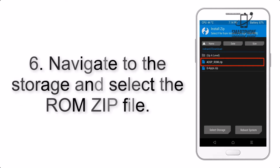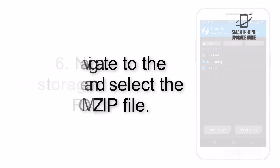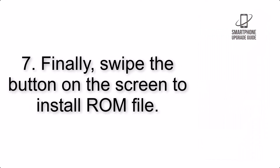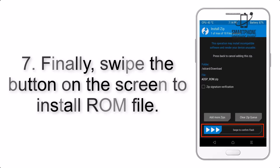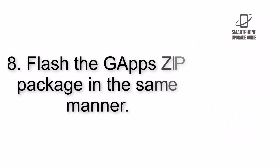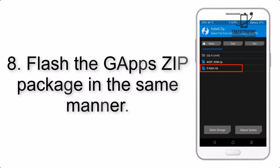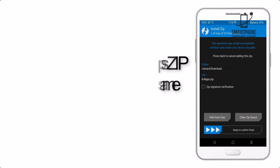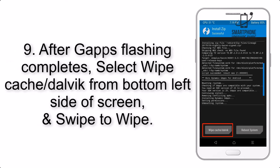Step 5: Go back to the recovery main screen and tap on the Install button. Step 6: Navigate to the storage and select the ROM zip file. Step 7: Finally, swipe the button on the screen to install the ROM file.